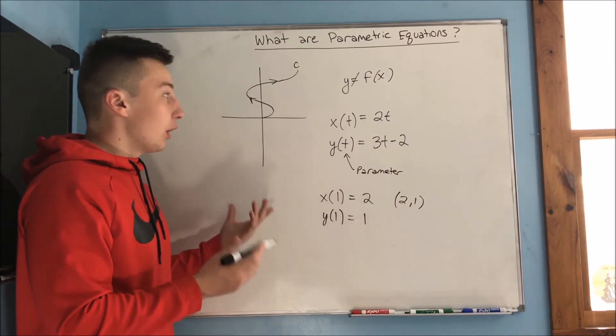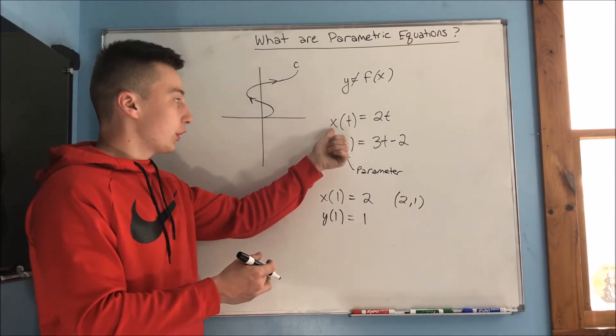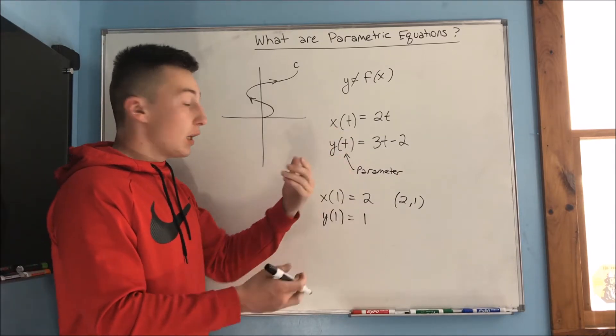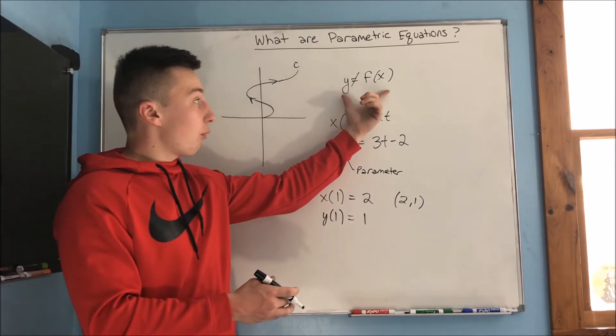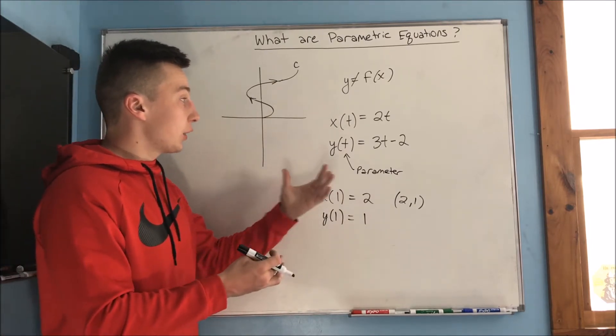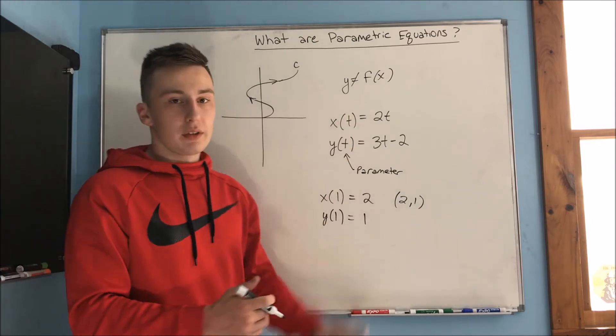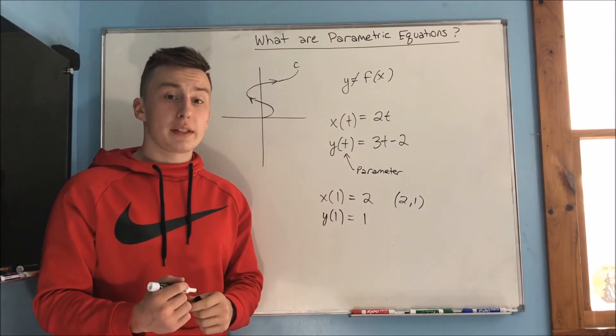So that kind of answers the question, these are parametric equations. You're describing x and y independently because you're not able to graph y as a function of x, and that's why it's allowing us to describe a curve that we couldn't normally describe using y as a function of x.